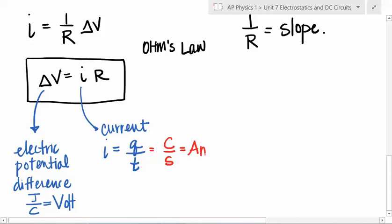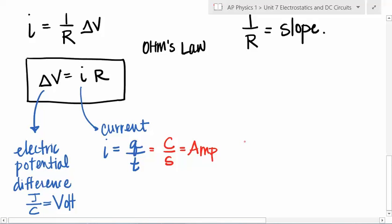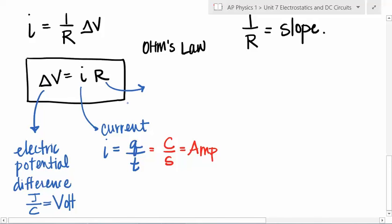Current is coulombs per second, but we call that an amp after André-Marie Ampère, a French physicist who was first able to successfully measure the flow of charge. Current is defined as charge per time — coulombs per second. That left the R, which Ohm described as resistance — like friction in the load — the thing causing energy to go from electrical energy to some other form.